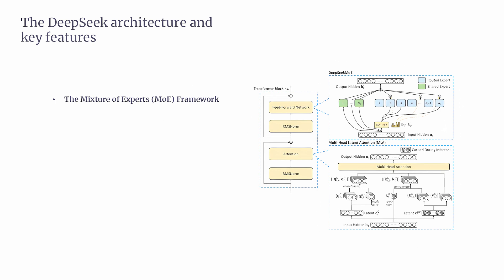Key features of MoE in DeepSeek: First, dynamic expert selection — the model has multiple expert neural networks and decides which ones to activate based on the input. Second, load balancing — it ensures all experts are used evenly to avoid overloading any specific part of the network. Because of this design, DeepSeek is cost-effective and performs well even on limited hardware.